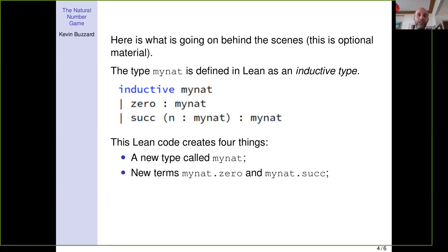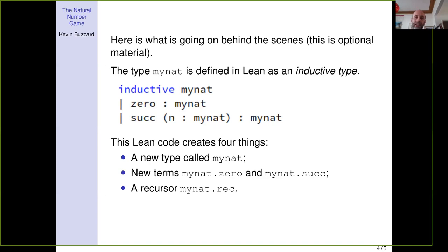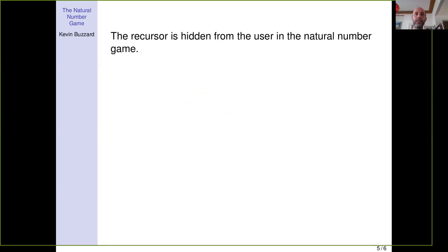The fourth thing created is a recursor — basically a principle of induction and recursion at the same time. It says: if you want to define a function on the natural numbers, tell me where zero goes, and if you know where n goes, tell me where n+1 goes. All of this magically appears in Lean's system when you run the inductive command.